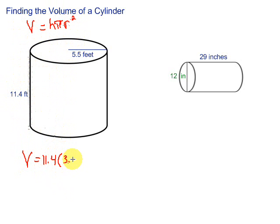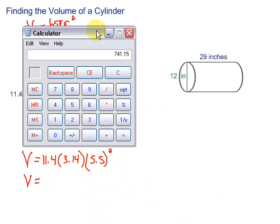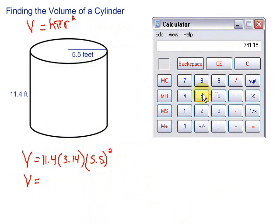We'll use 3.14 for pi. Then times r squared. R is the radius, 5.5, and we want to square that. According to the order of operations, we need to take care of that squared piece first. Squared means times itself, so it's 5.5 times 5.5, which gives us 30.25.